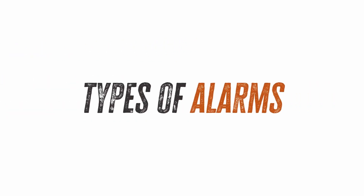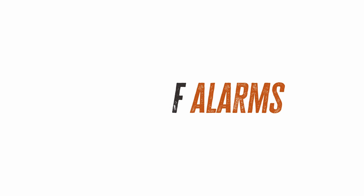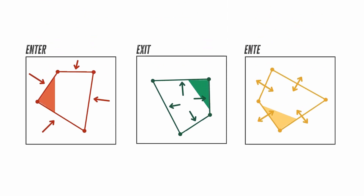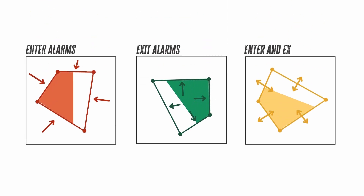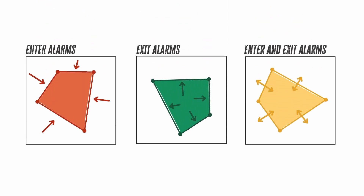There are three types of alarms: one when animals enter an area, one when animals exit an area, and one where either entering or exiting sends an alarm to your phone.